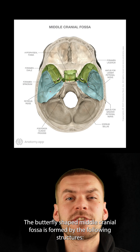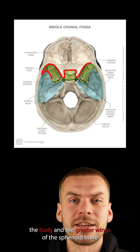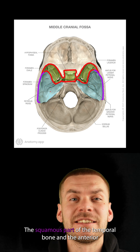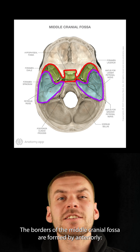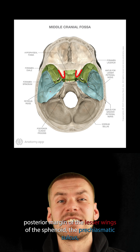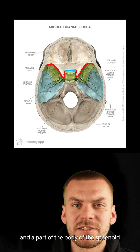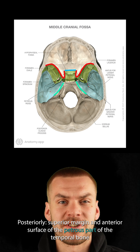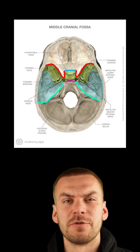The butterfly-shaped middle cranial fossa is formed by the body and the greater wings of the sphenoid bone, the squamous part of the temporal bone, and the anterior surface of the petrous part of the temporal bone. Its borders are formed anteriorly by the posterior margin of the lesser wings of the sphenoid, the pre-chiasmatic sulcus, and a part of the body of the sphenoid; posteriorly by the superior margin and anterior surface of the petrous part of the temporal bone and the dorsum sellae of the sphenoid bone.